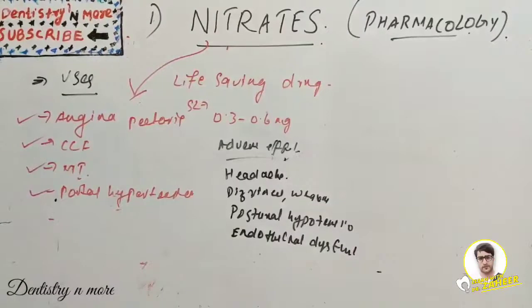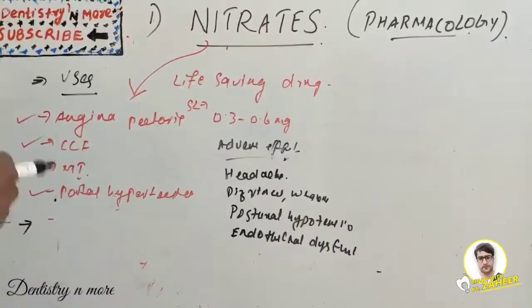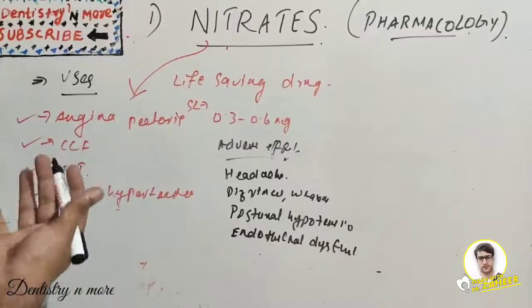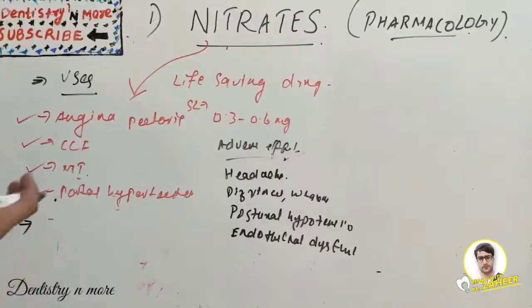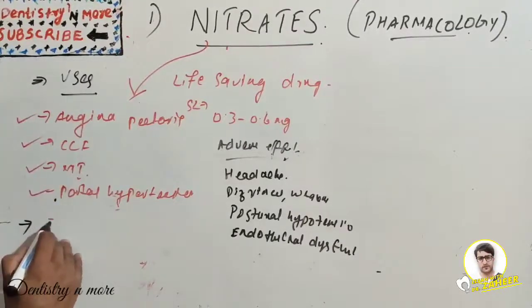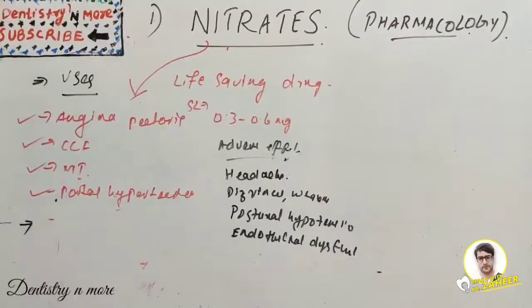Tolerance level is important. Tolerance to the actions of nitrates develops rapidly and blood vessels become desensitized to vasodilation. Reduced capacity of the vascular smooth muscle to convert nitroglycerin to nitric oxide - that is true tolerance.